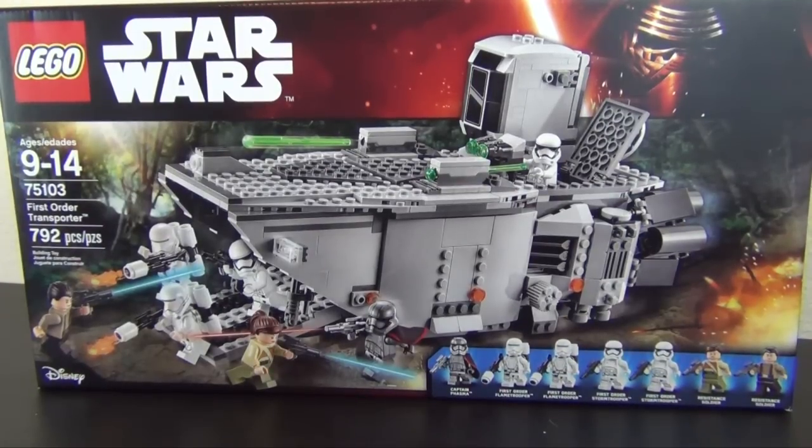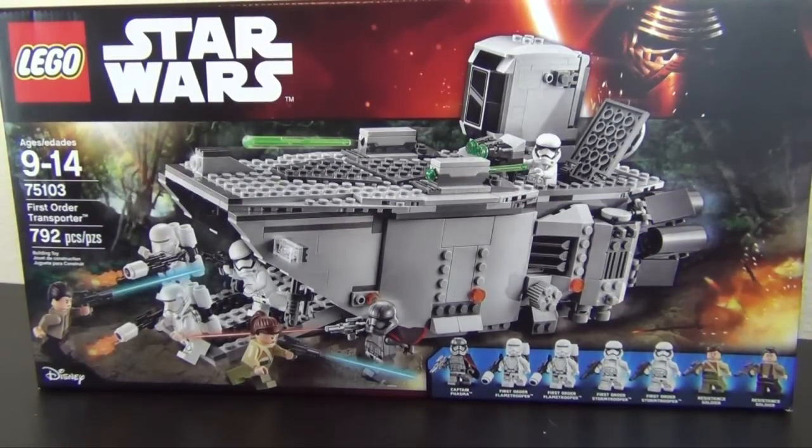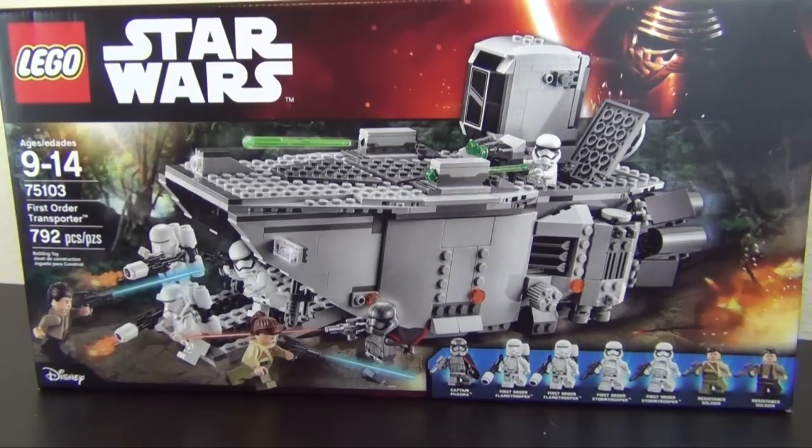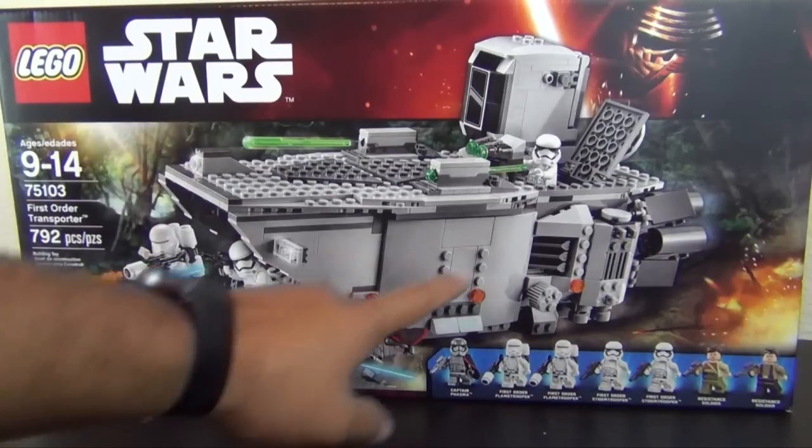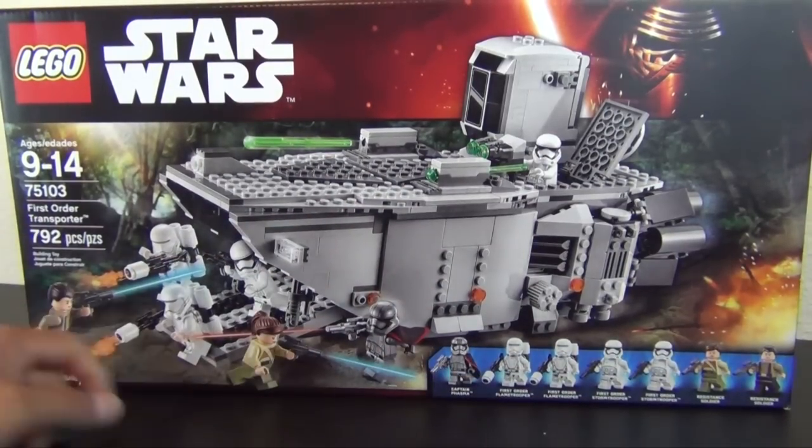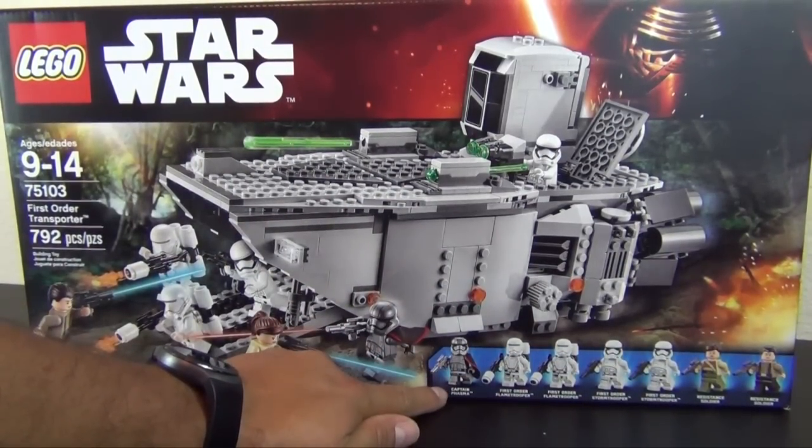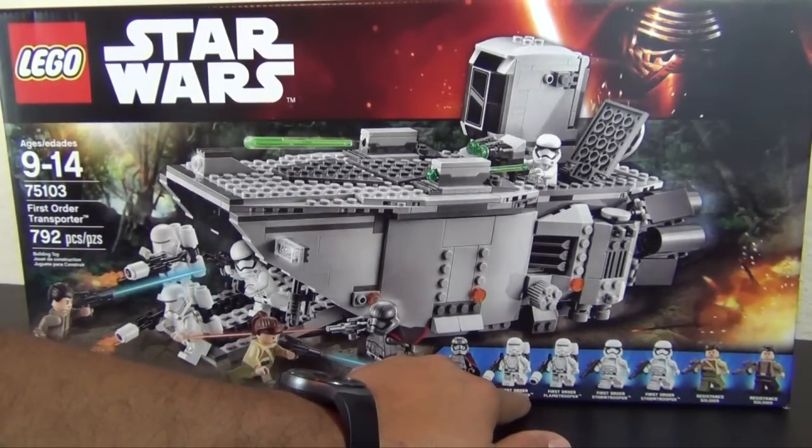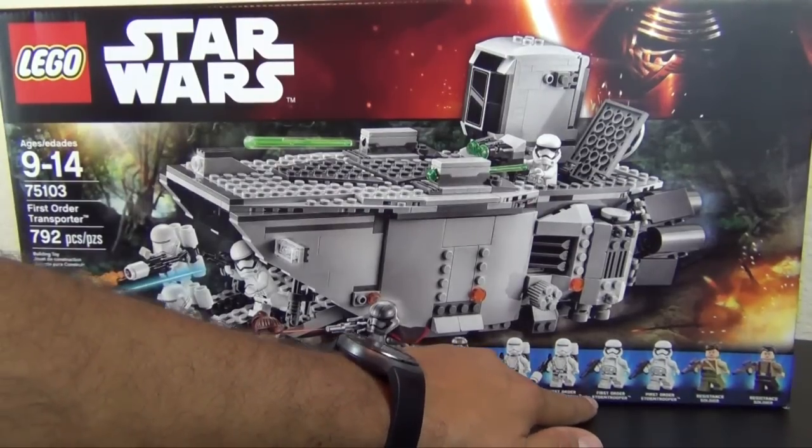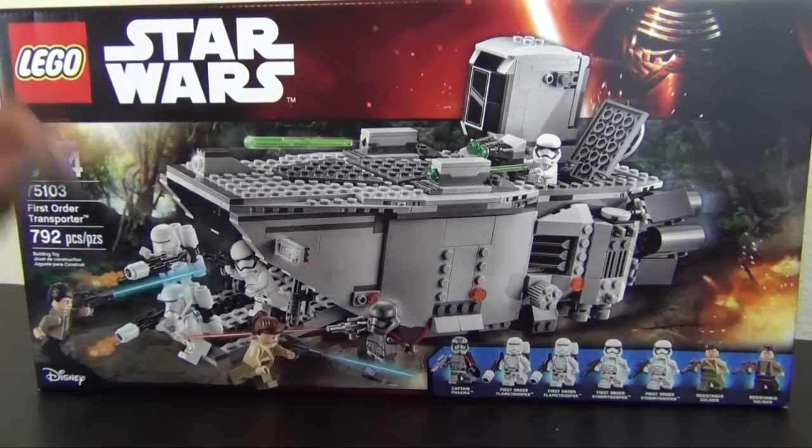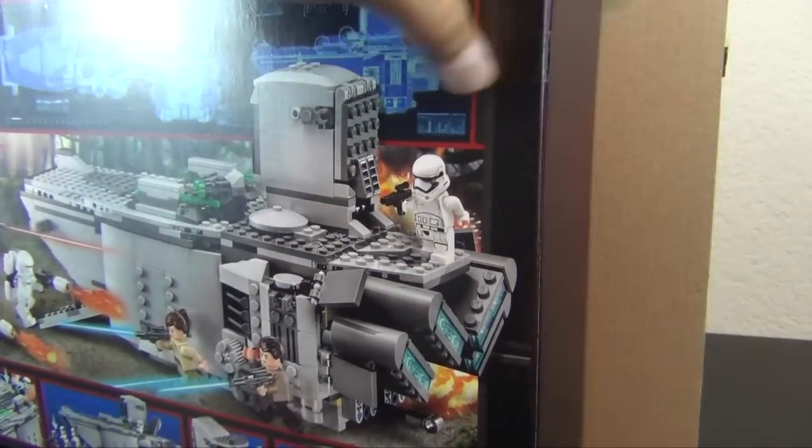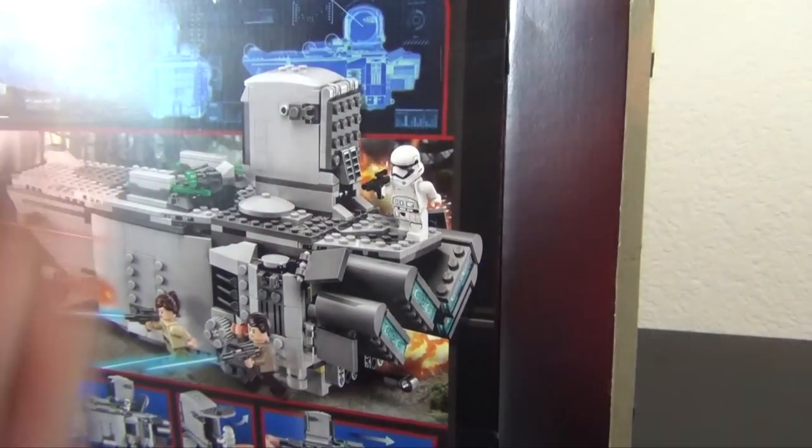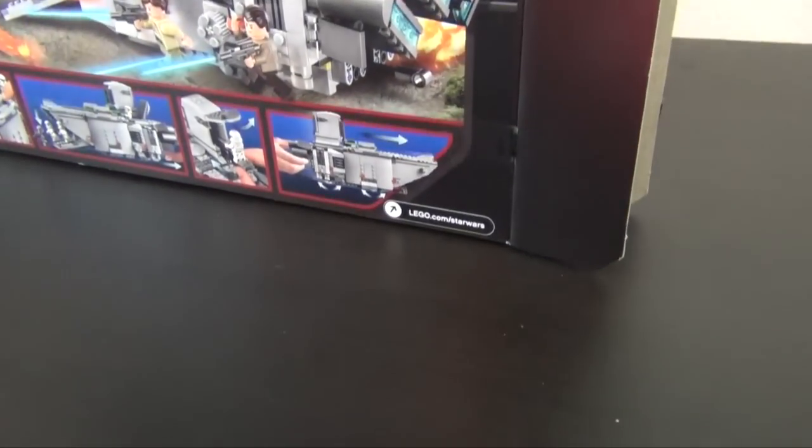Hey everyone, welcome back to The Hidden Brick where today we're going to do part one of the build of the LEGO Star Wars First Order Transporter. This is set number 75103, 792 pieces, and we have the transporter and a slew of minifigures including Captain Phasma, two First Order flame troopers, two First Order stormtroopers, and two resistance soldiers, a male and a female. Alright, enough talking, we're here to see the build. Let's see what is in the contents of this box.